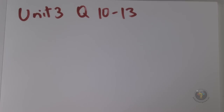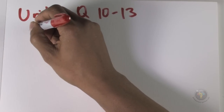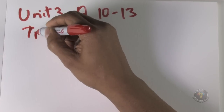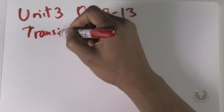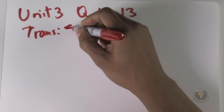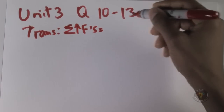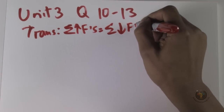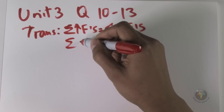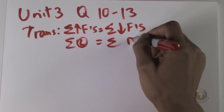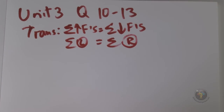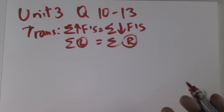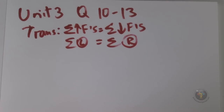There are two concepts that solve all torque force problems. The first is translational equilibrium, which says that if you sum all the upward forces, it equals the sum of all the downward forces. Likewise, all forces to the left equal all forces to the right. If the object is not accelerating, it's in equilibrium — either stationary or moving at constant velocity — with no net force in any direction.